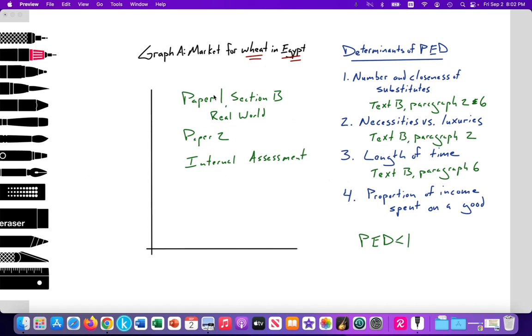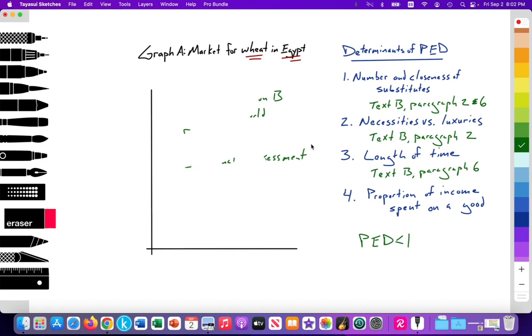So we know that our market demand curve is going to be inelastic. So again, this video is highlighting we can use these real-world examples for paper 1, section B, paper 2. And it helps to understand an internal assessment. So let's go ahead and draw this.